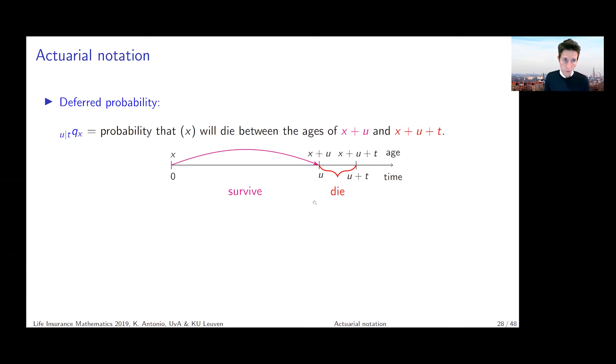And then he or she should die between x plus u and x plus u plus t. And that's indicated here in red. So this deferred mortality probability can therefore be written as a multiplication of a survival probability in magenta and a probability of dying in red, right? So the way to calculate this deferred probability is here at the bottom. It's _uP_x, the survival probability multiplied with _tq_{x+u}, the probability of dying within t years, given that you reached age x plus u.